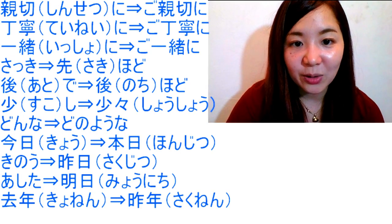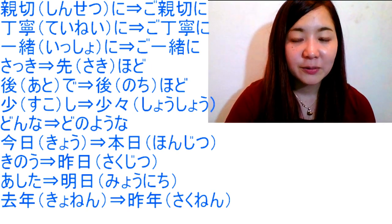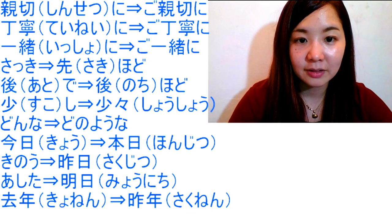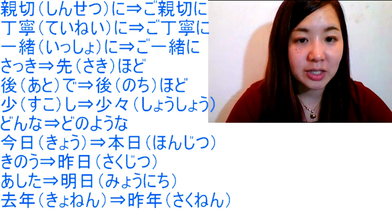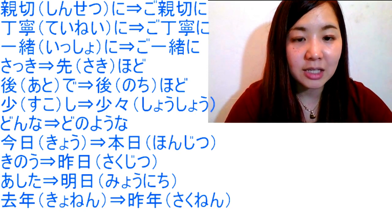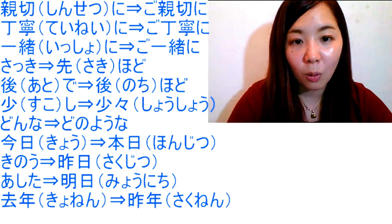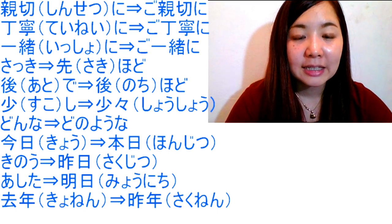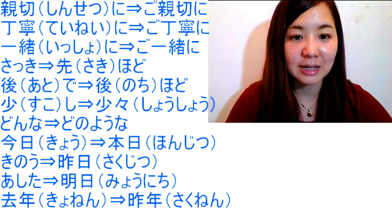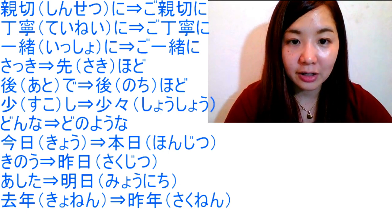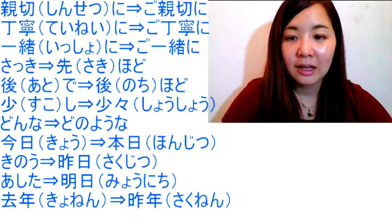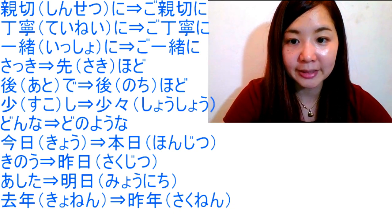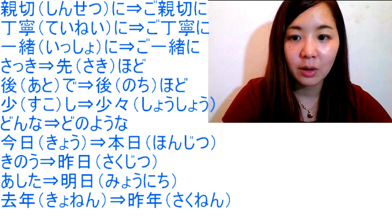We also have other words that you have to change into polite style. For example, しんせつに (kindly) becomes ごしんせつに. しんせつ is Chinese-originated pronunciation, so in this case we use ご instead of お. 丁寧に (politely) becomes ご丁寧に. 一緒に (together) becomes ご一緒に. さっき (earlier) becomes さきほど. あとで (later) becomes のちほど. すこし (a little bit) becomes 少々. どんな (what kind of) becomes どのような.